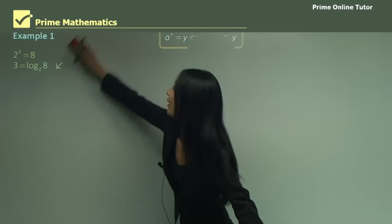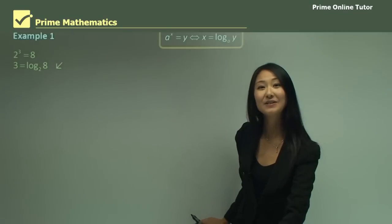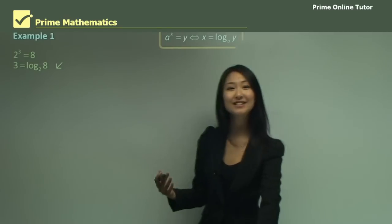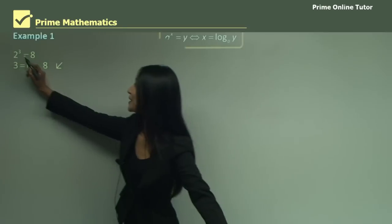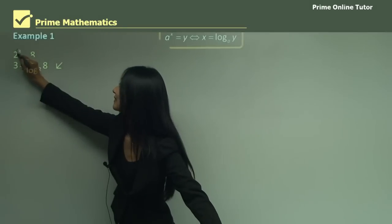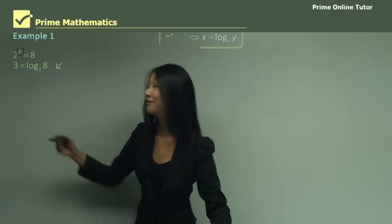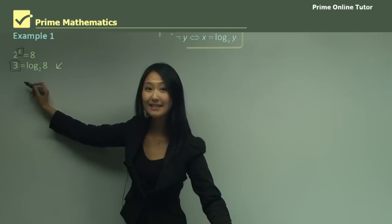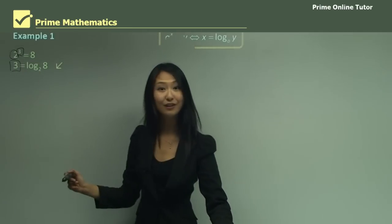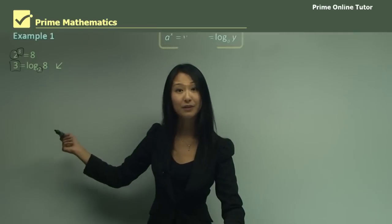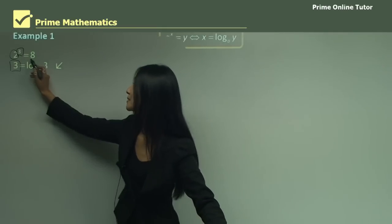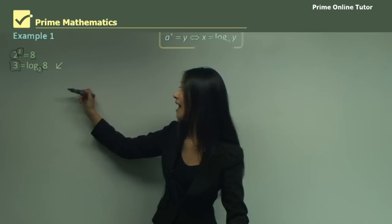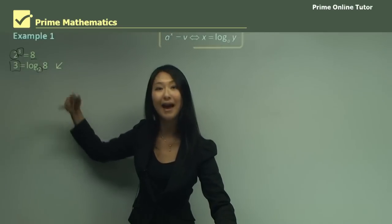Let's look at example one. We have the index form 2 to the power of 3 equals 8, and we need to change that into logarithm form. The index is 3, so we put that first: 3 equals the logarithm. The base of the index is 2, which also becomes the base of the logarithm. Finally, we move 8 over. So the answer is 3 equals log base 2, 8.